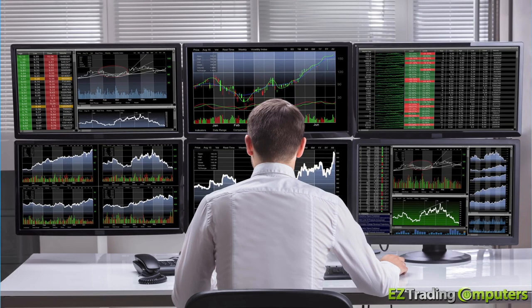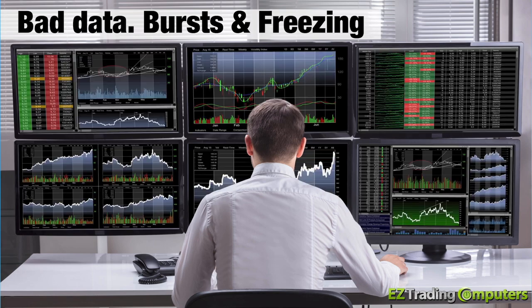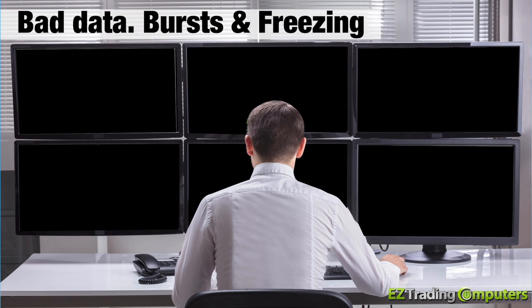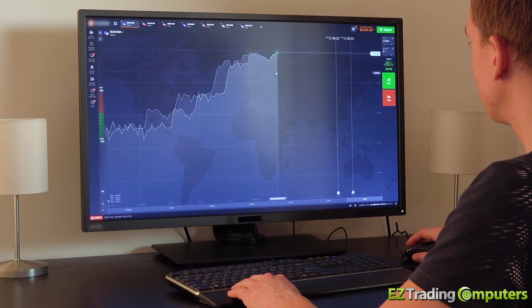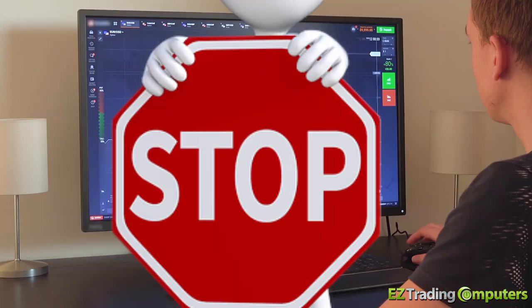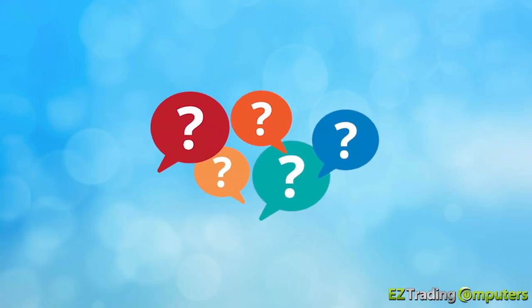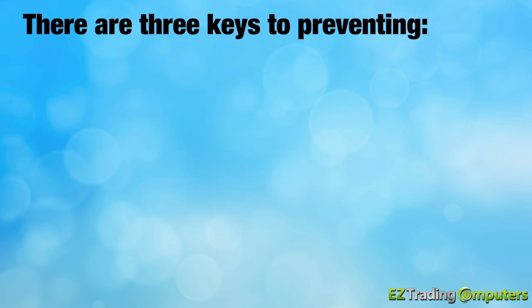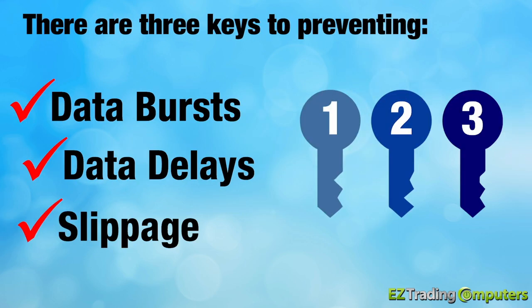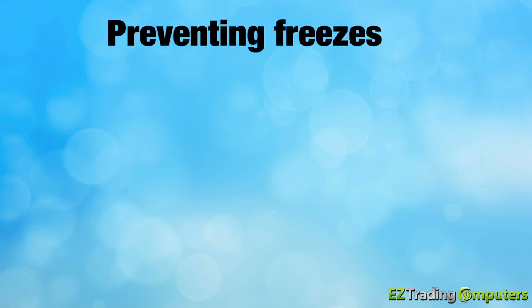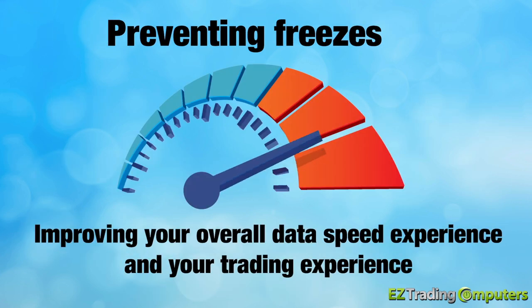One complaint I hear from traders all the time is, my data seems to flash or burst on and off during extremely volatile markets and around news events. Sometimes my data and my computer even freezes. How can I make this stop happening? Well, essentially there are three keys to preventing data bursts, data delays, eliminating slippage, preventing freezes, and improving your overall data speed and trading experience.